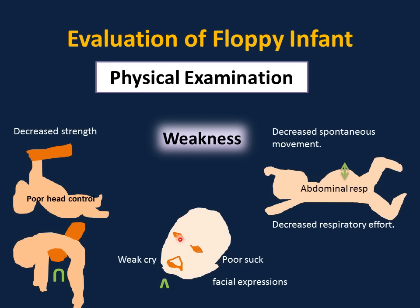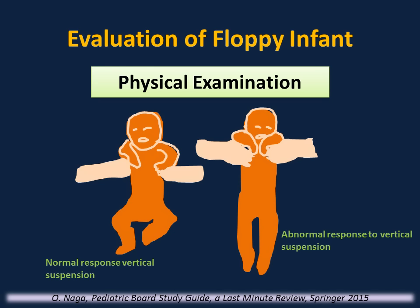Normally in newborn infants, if you try to open the eyelid, it will be very difficult on a second attempt. In cases of hypotonia, it will be very easy to open the eyelid with no resistance. Cases of hypotonia also have decreased spontaneous movements, and if you look at their abdomen while breathing, they are using their abdominal muscles to breathe with decreased respiratory effort through the chest. If you suspend an infant with hypotonia vertically under their shoulders, you will feel the shoulders slipping through, and the legs hang limply without flexion — this is an abnormal response to vertical suspension.